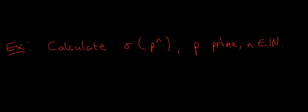Suppose that p is a prime number and n is a natural number. This could, for instance, be sigma of 5 to the power 10. What's the sum of the divisors of that number?